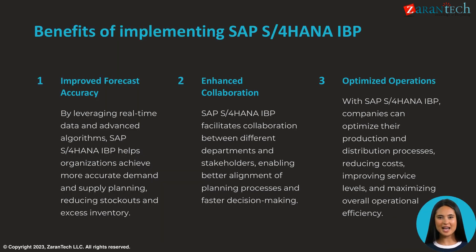SAP S/4HANA IBP provides several important benefits. First, it improves forecast accuracy by leveraging real-time data and advanced algorithms for better demand and supply planning. This reduces stockouts and excess inventory. Second, it enhances collaboration between departments through integrated planning processes, enabling better alignment and faster decision-making.